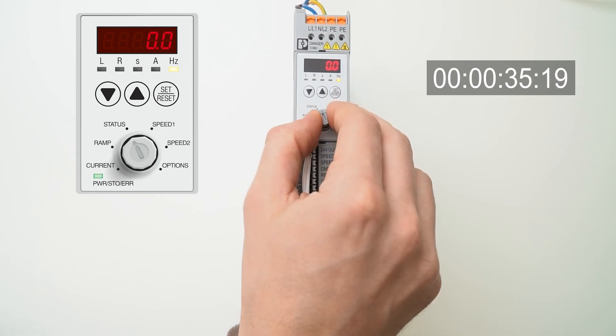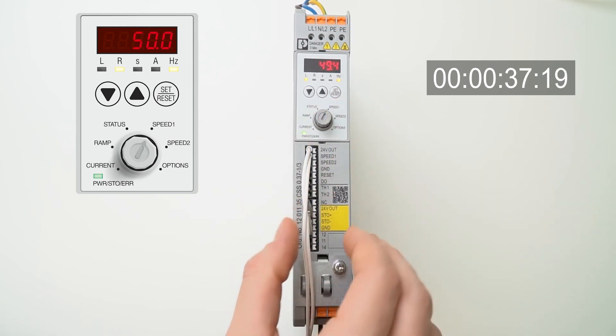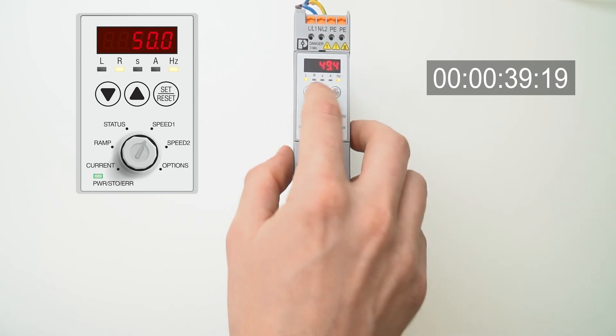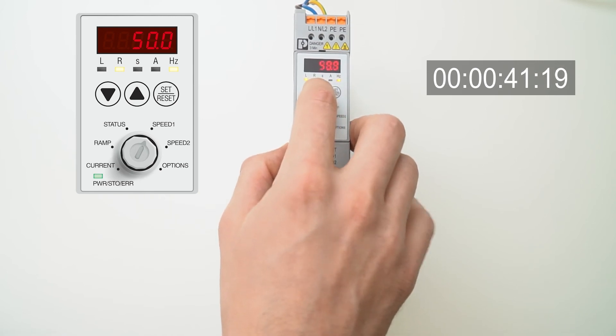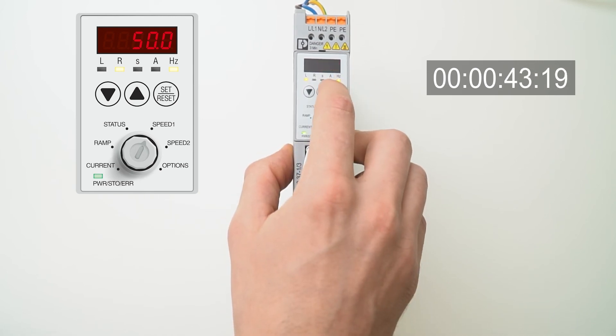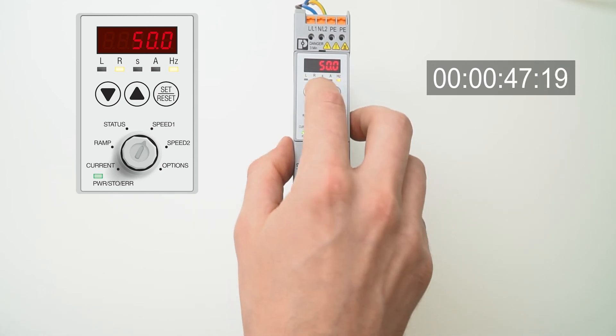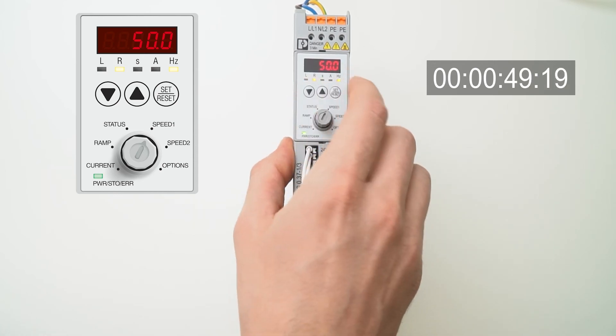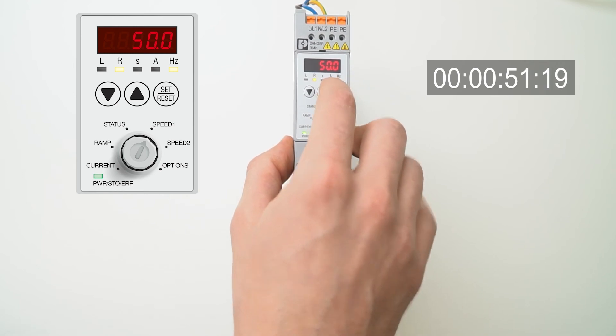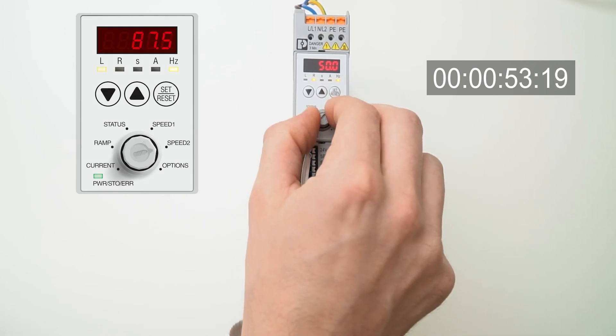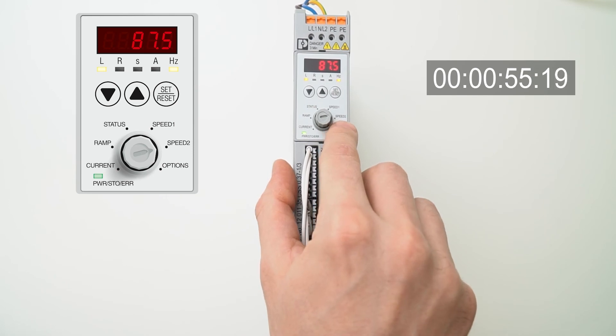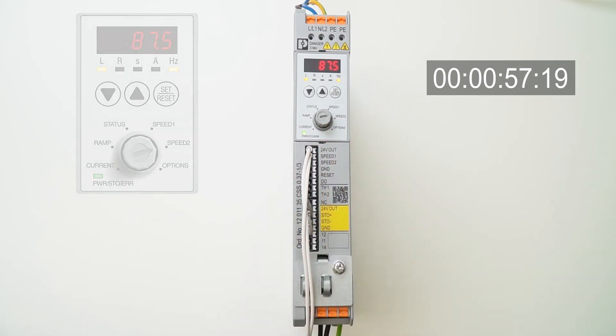If you want to change the speed, change the rotary switch to speed 1 and with up and down button change the value and press set reset to store the value. If you want to change the rotation of the motor, just press up and down button again to change the rotation, press set reset to store the value and do the same thing if you need a second speed. Turn the rotary switch to speed 2 and you are already done with your commissioning.